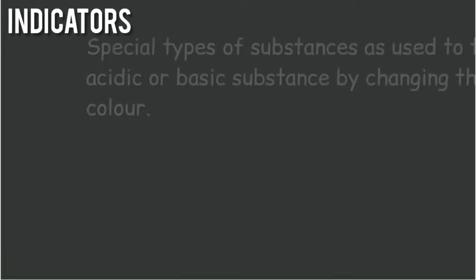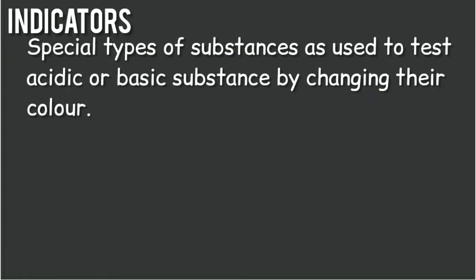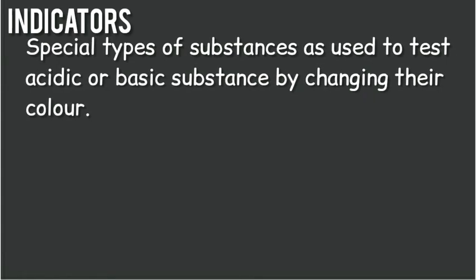What are indicators? A special type of substance used to test acidic or basic substances by changing their color. There are two types of indicators: natural indicators and synthetic indicators.